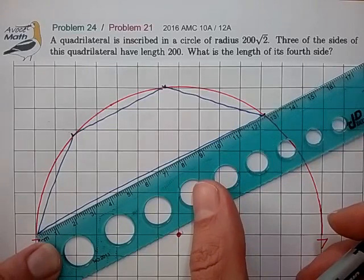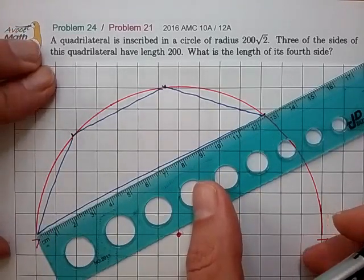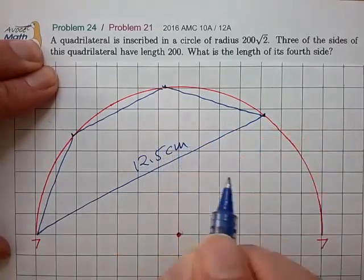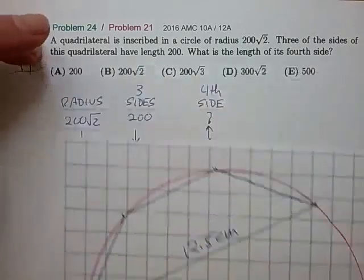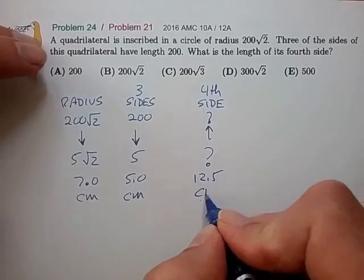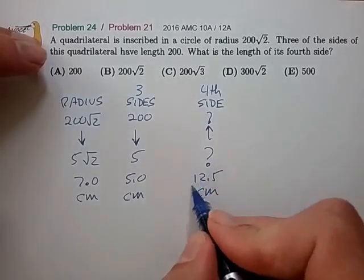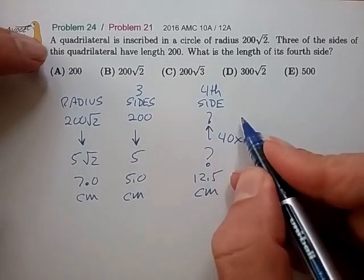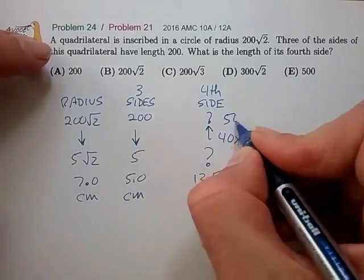So we see this fourth side measures very close to 12.5 centimeters. So now we can take this number and bring it back to our first page. To discover that when we multiply this back by the 40x scale factor that we've chosen, this works out to a fourth side length of very close to 500.